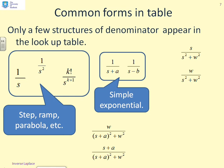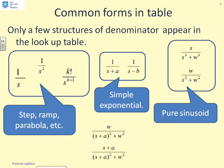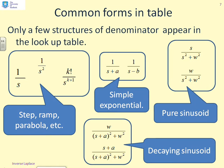The next structure is things like 1 over s plus a or 1 over s minus b. These correspond to simple exponentials. If you see something which has a denominator s squared plus ω squared, these correspond to pure sinusoids. The change in the numerator simply dictates whether it's a cosine or a sine, but the underlying form of signal is the same, it's a sinusoid.